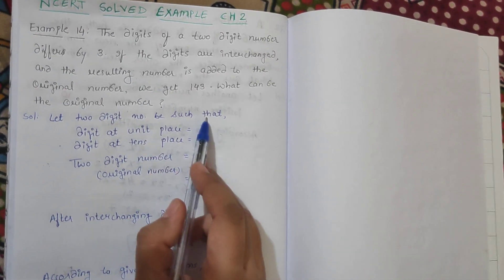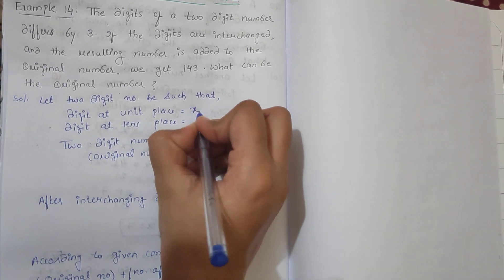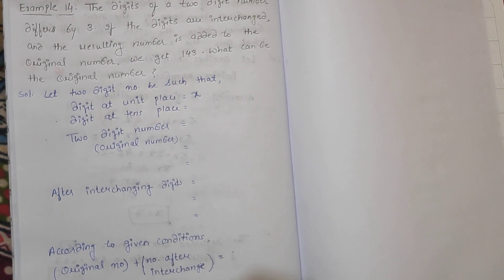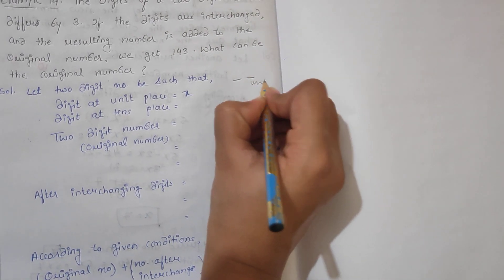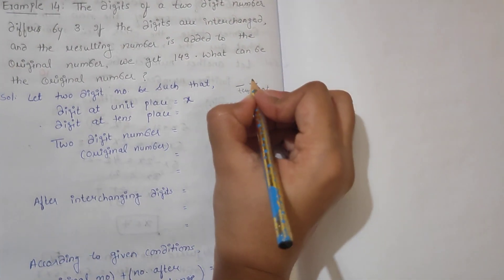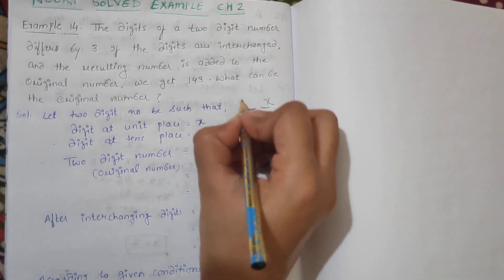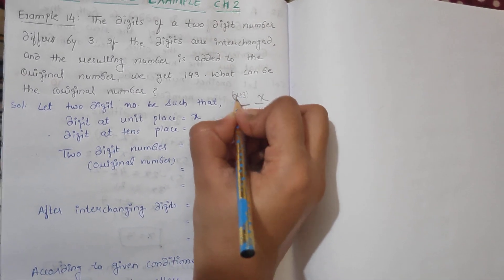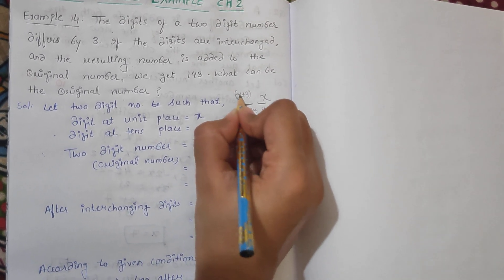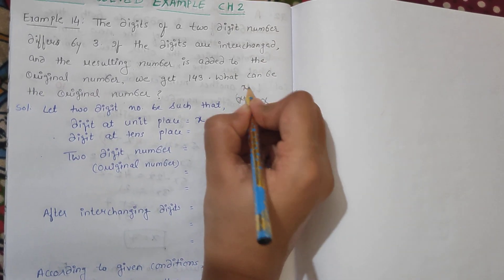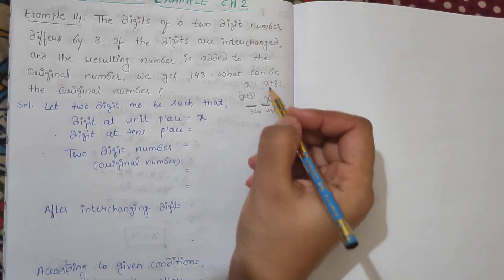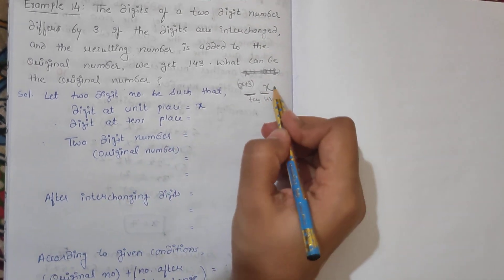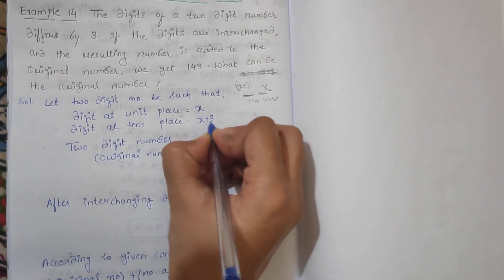Let us consider the two digit number such that the digit at unit place is x. We have a unit place and a tens place. The digit at tens place will be x plus 3, because the difference between the two digits is 3. You can also write the tens place as x and unit place as x plus 3 — both will give a correct answer. In general, we will take unit place as x and tens place as x plus 3.